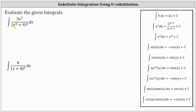Notice in this case, we let u equal x to the eighth plus nine. We should recognize the derivative is going to be of degree seven, which matches the numerator. So we'll let u equal x to the eighth plus nine. By letting u equal x to the eighth plus nine, the denominator is now just u to the third, and we're left with three x to the seventh dx. The next step is to determine differential u and see if it matches the remaining parts of the integral.